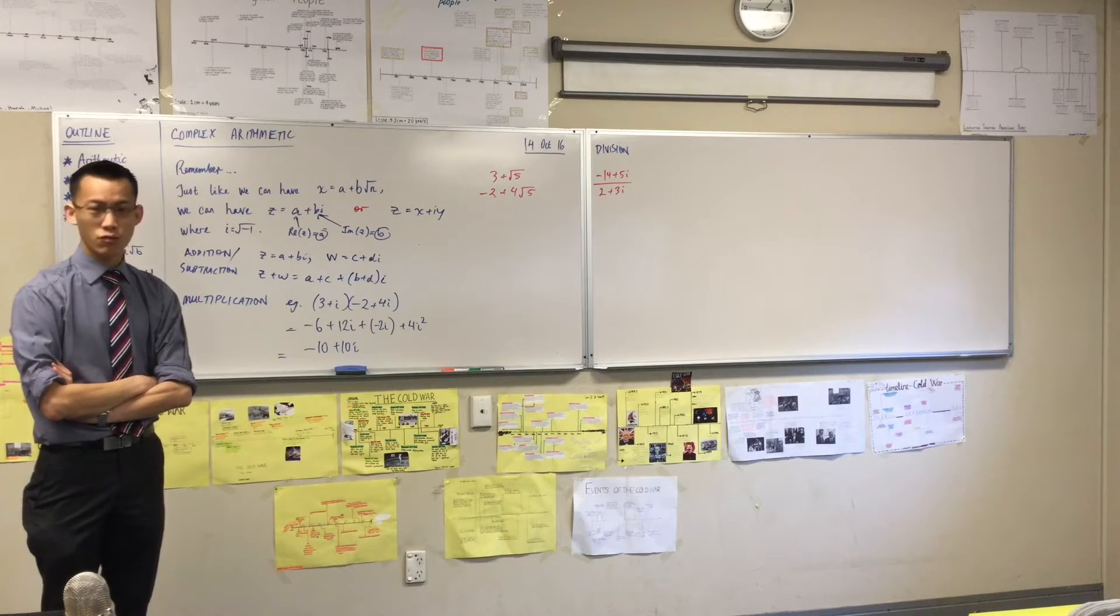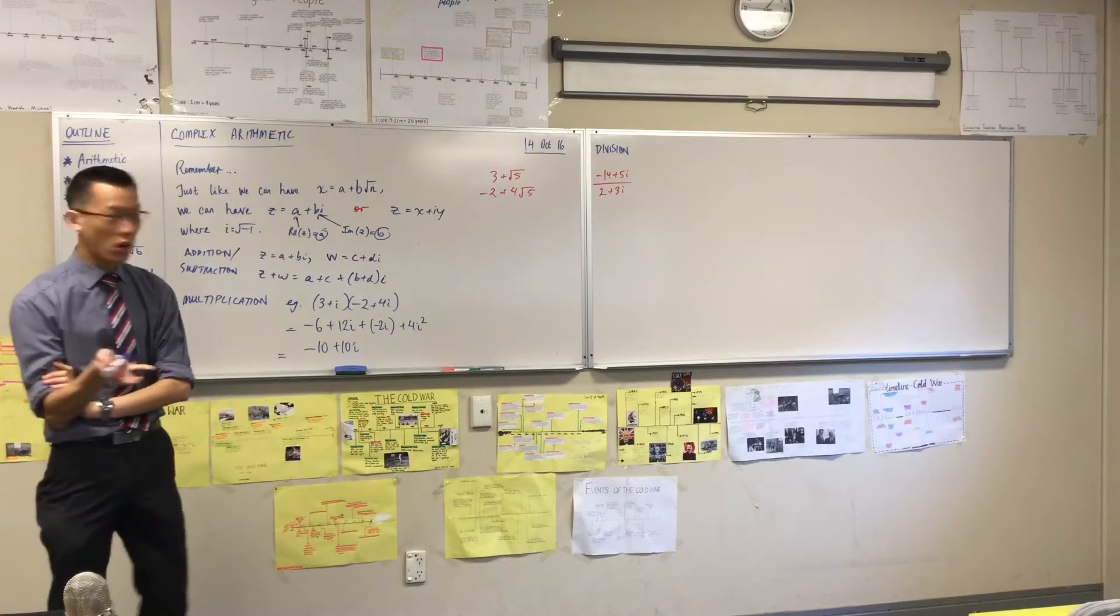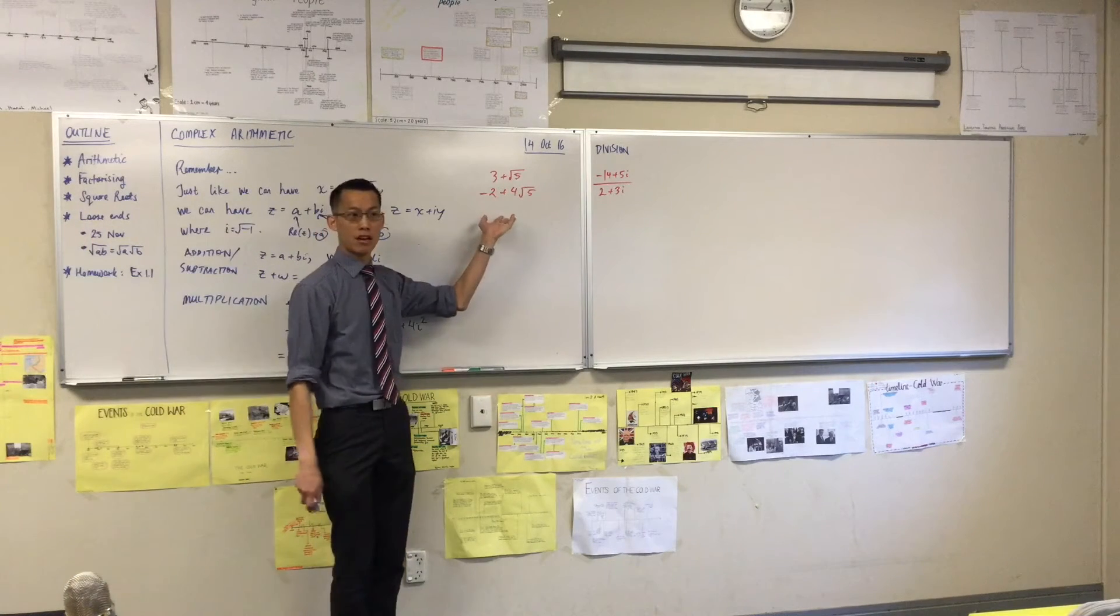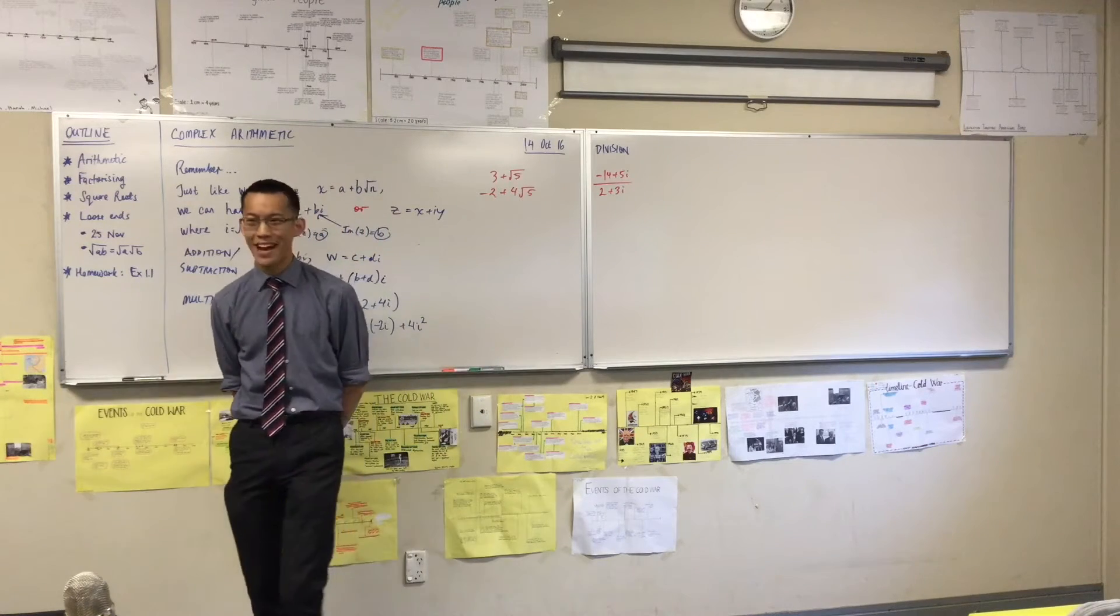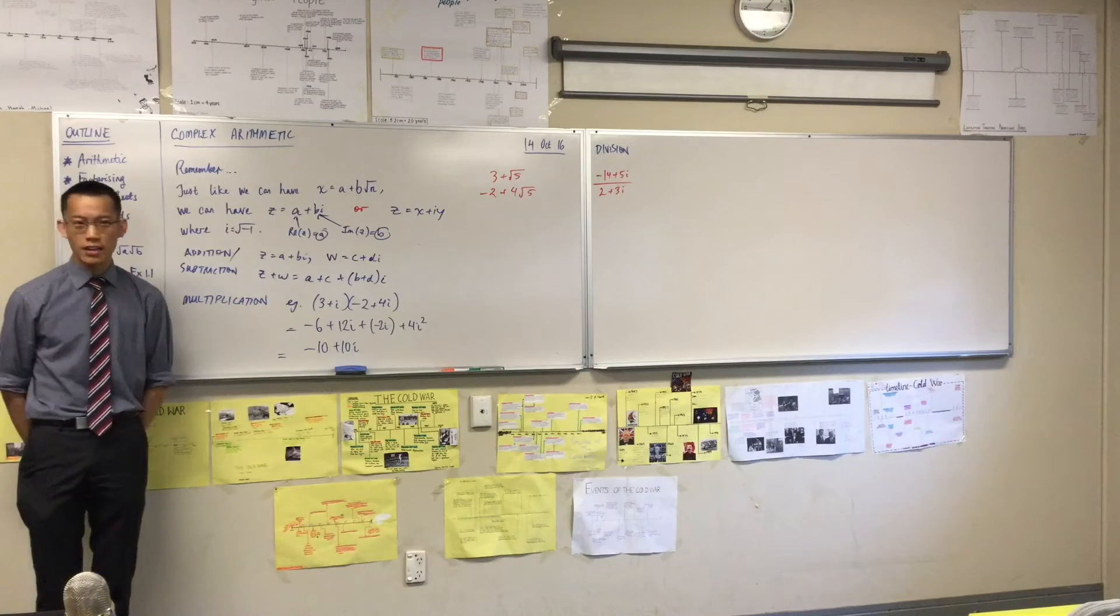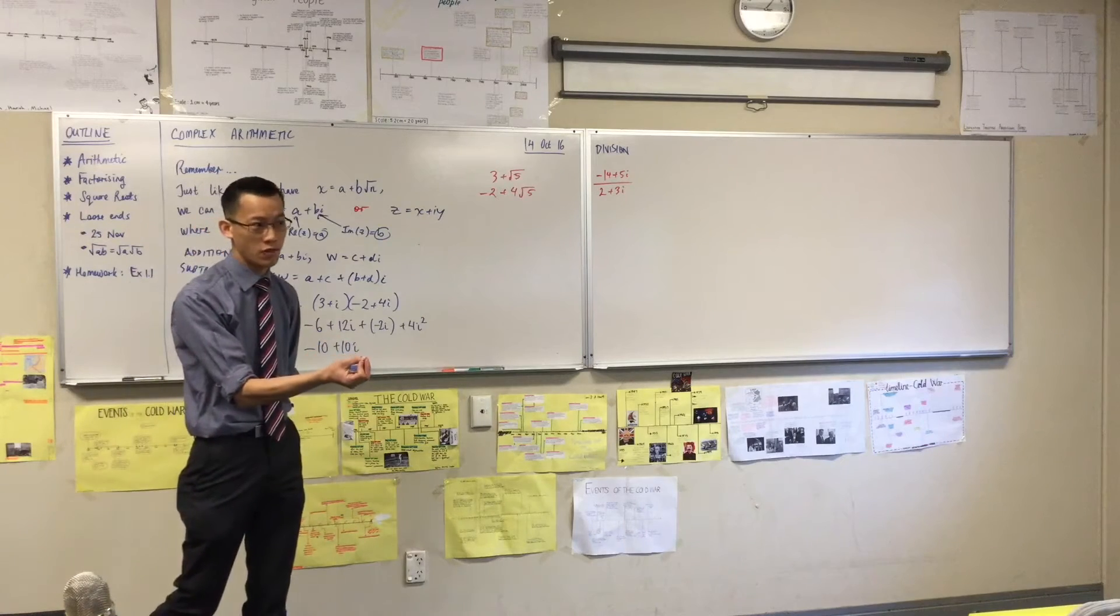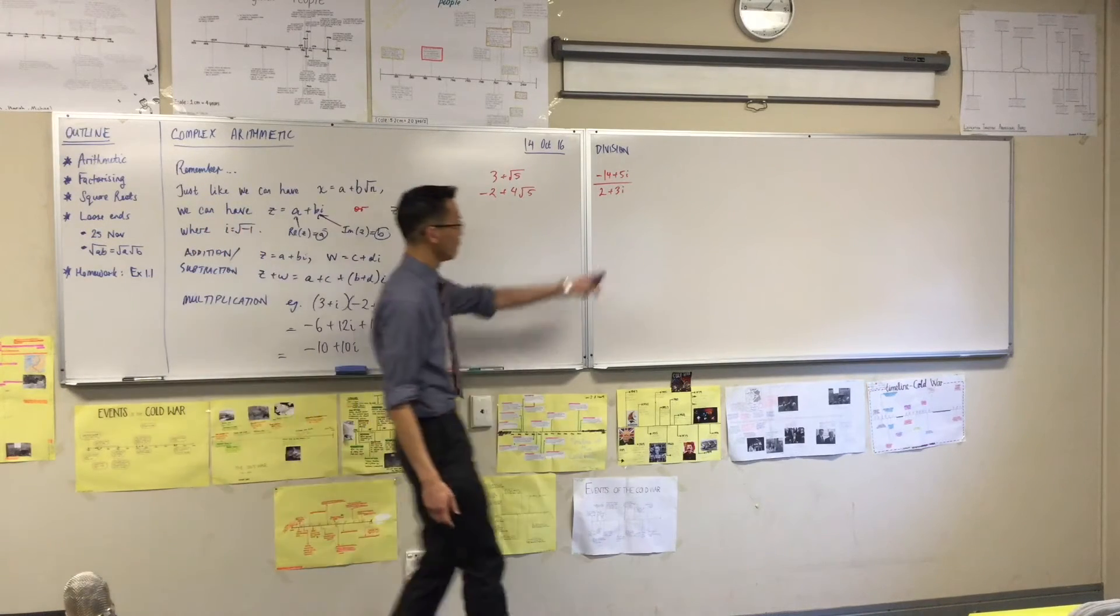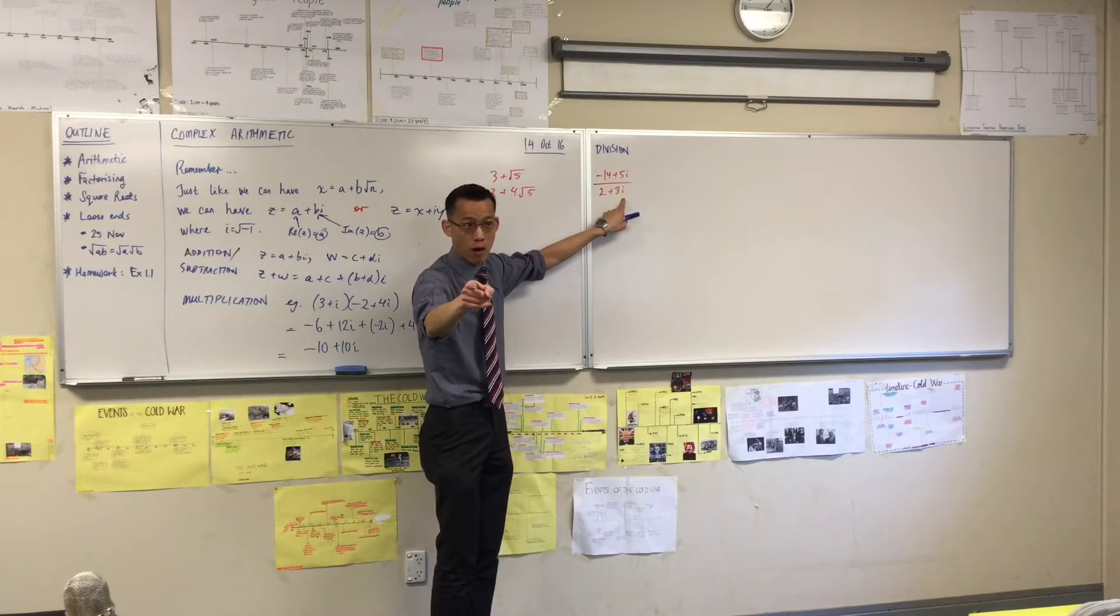Rationalizing denominators, that's a really helpful idea. But rationalizing makes sense when what you've got is an irrational number. Now, I have no square roots there. I will get to square roots soon. Rationalizing doesn't make sense, right? Because it's not the fact that it's irrational that's the problem. The problem is that I have non-real parts in there. But this is a very helpful idea.